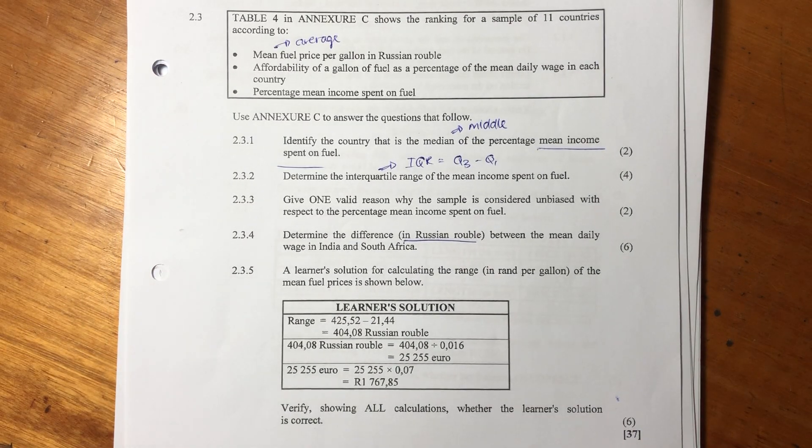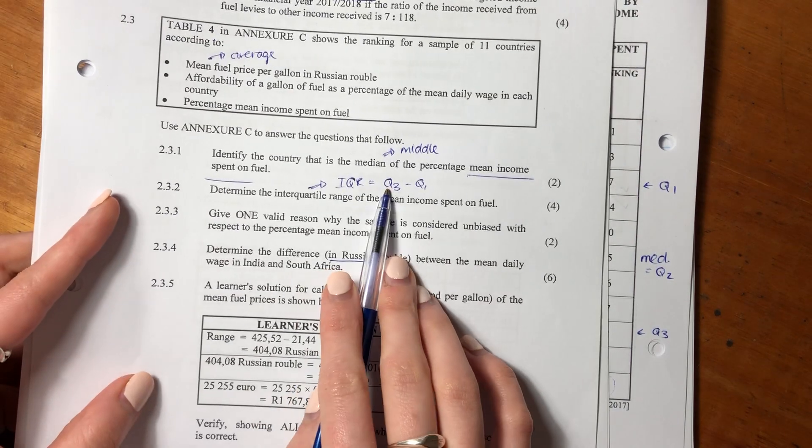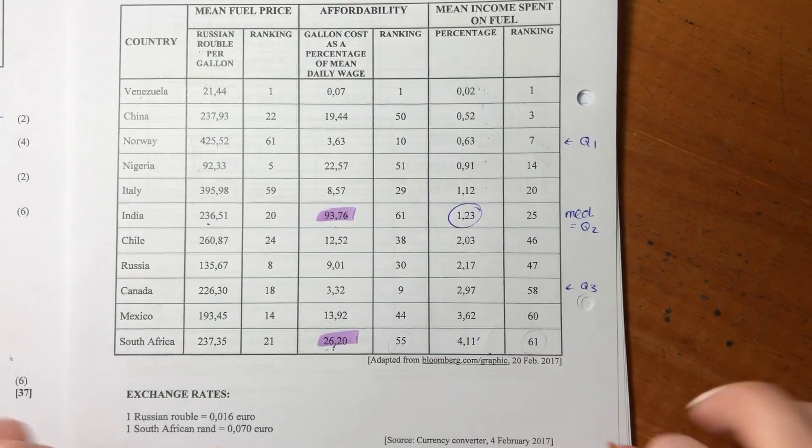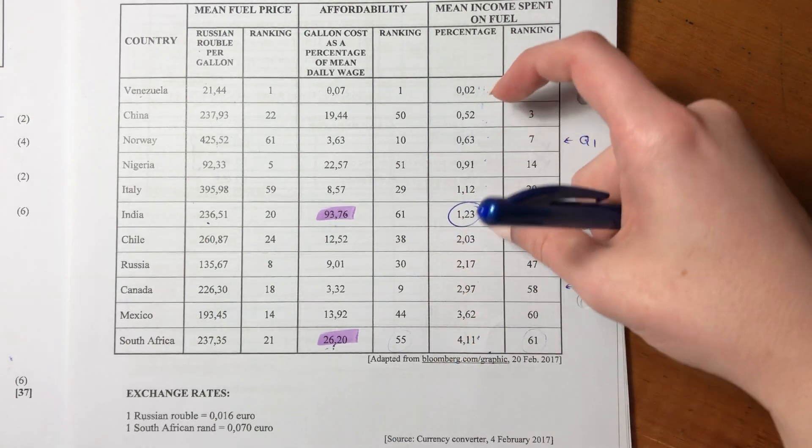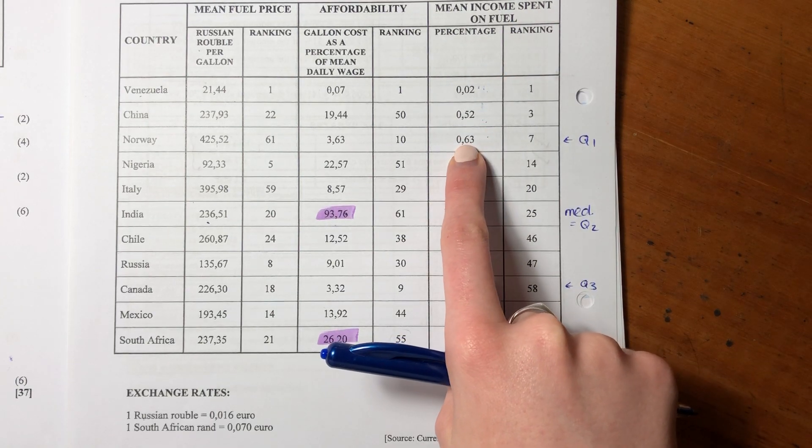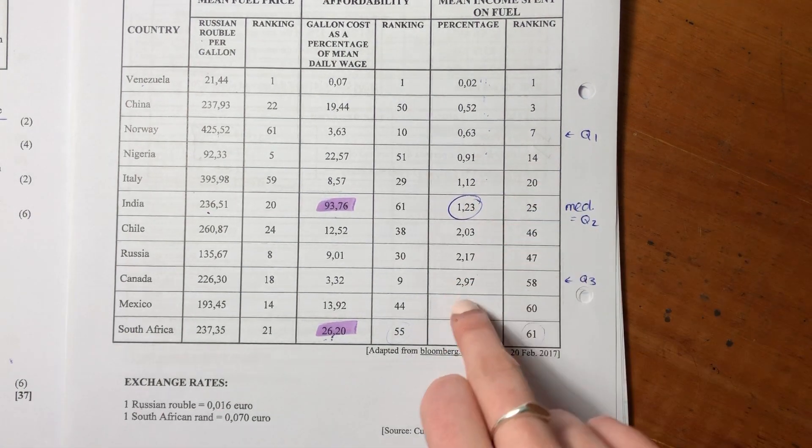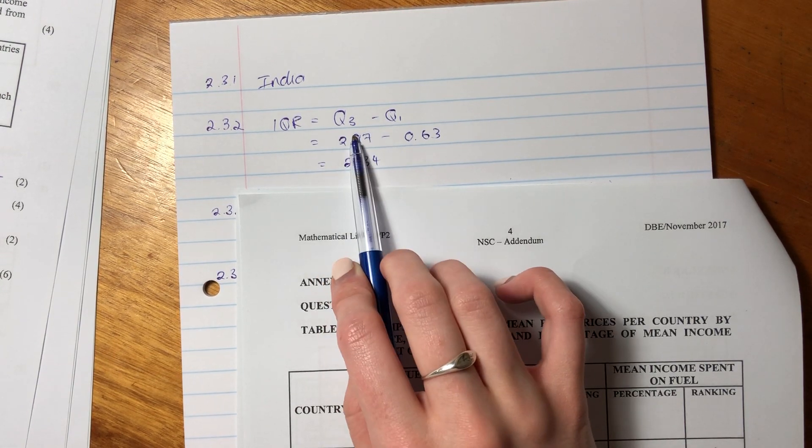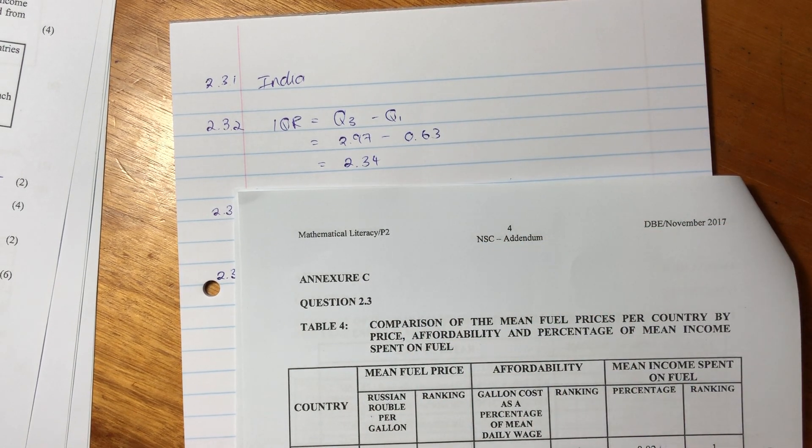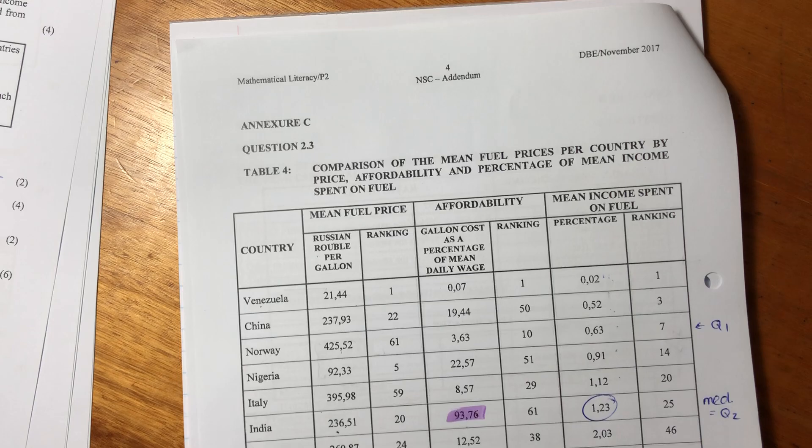Then 2.3.2 says determine the interquartile range of the mean income spent on fuel. So again, we're still in that same column, except now we are finding the interquartile range. The interquartile range is Q3 minus Q1. So now we found Q2, and we must remember that Q1 is the median of the data below the actual median. We have five data points there. We count in. Our median is Norway. Q3, similarly, is just the median of the data above the actual median. We count in, and we see that Canada is our Q3. So we're going to write here Q3 minus Q1. That's the value for Canada minus the value for Norway, and the interquartile range is 2.34.